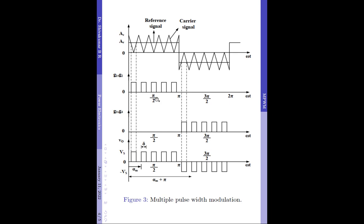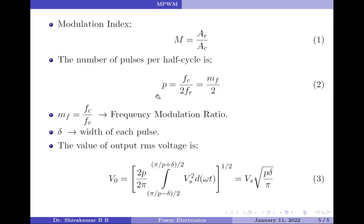Now, coming to the mathematical part, let us find how many pulses will be generated per each half cycle. As we already know, that is controlled by the frequency of the carrier signal. The minimum requirement is that the carrier signal frequency must be at least twice that of the reference signal frequency; otherwise it would become Single Pulse Width Modulation. So the minimum number of pulses to qualify as Multiple Pulse Width Modulation is 2. The number of pulses per half cycle is given by Fc divided by 2Fr.